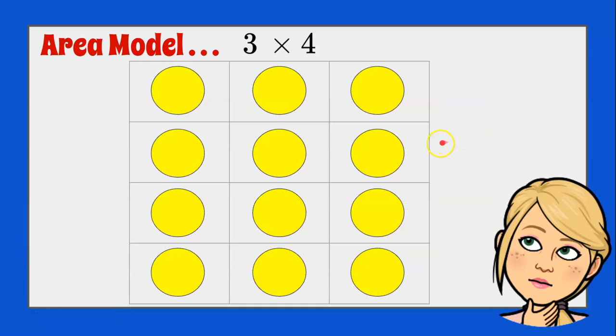Now we could do the area model the other way. I could have 3 across and 4 for the height. 4 times 3 is 12.